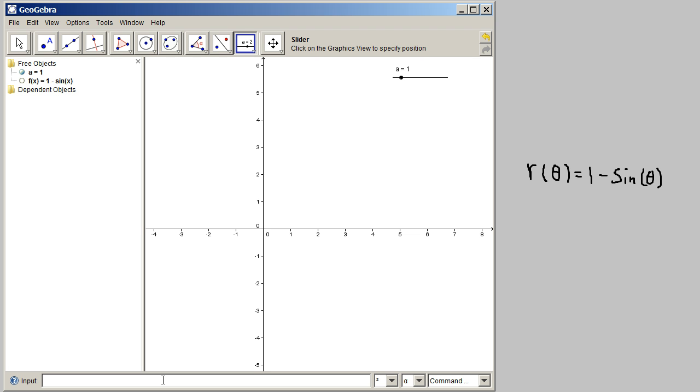So we're going to use this function that we just wrote, f of x equals 1 minus sine x as our function. And to get the x component of it, we would just take cosine of t times f of t. The y coordinate of it is going to be sine of t times f of t. The parameter is t, in case you were wondering why I was talking about t's. t is going to start at 0 and t is going to end at the value a.